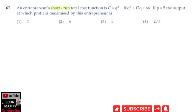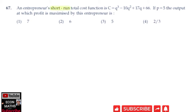Hi, in this video we will solve a question on profit maximization. The question is: an entrepreneur's short-run total cost function is C = Q³ - 10Q² + 17Q + 66, where Q is the quantity and C is the total cost. If P = 5, the output at which profit is maximized by this entrepreneur is what we have to find.